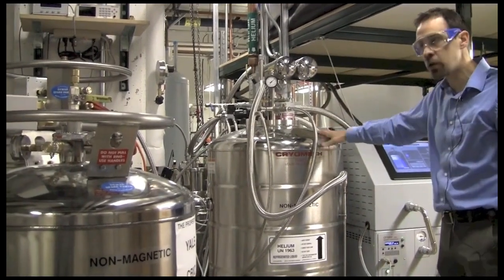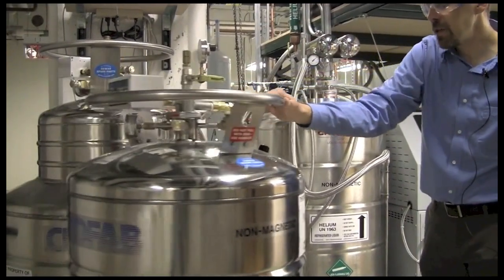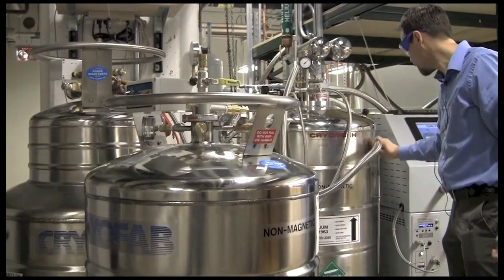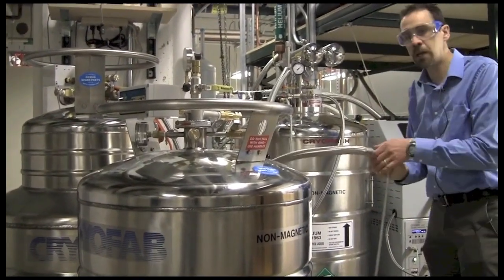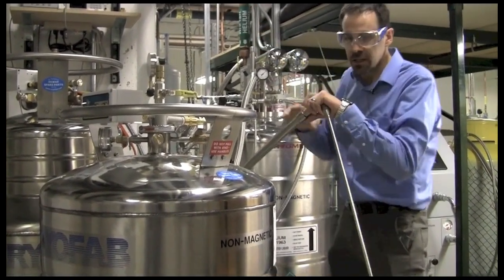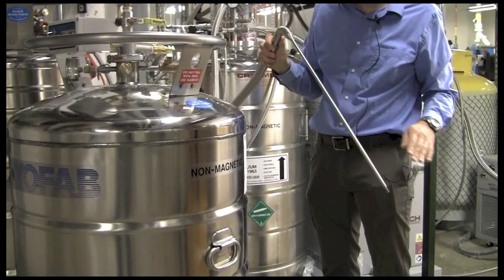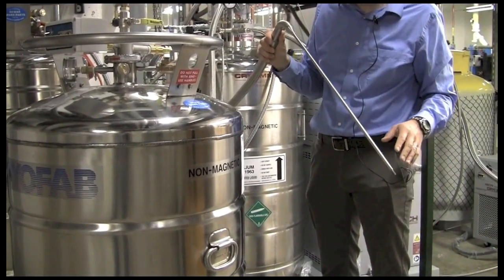we take it from our storage dewar and put it into a transport dewar. The way we do that is we use a transfer line and the first thing we need to do is cool down the transfer line so that we're putting liquid helium into the transfer dewar rather than helium gas or possibly impure helium gas.